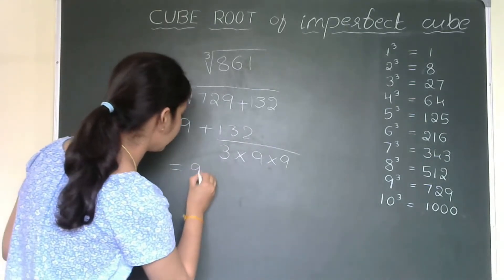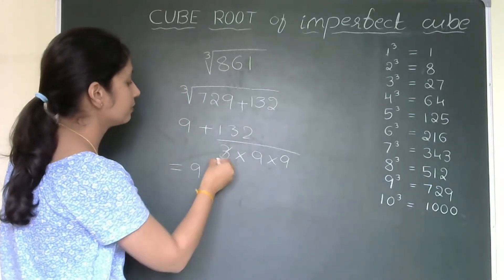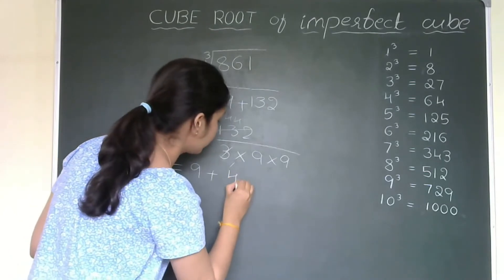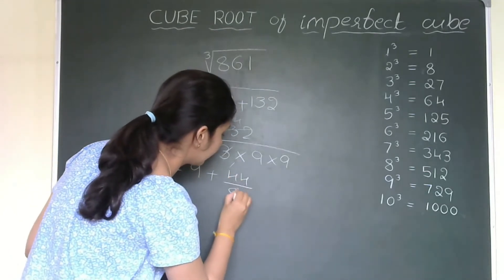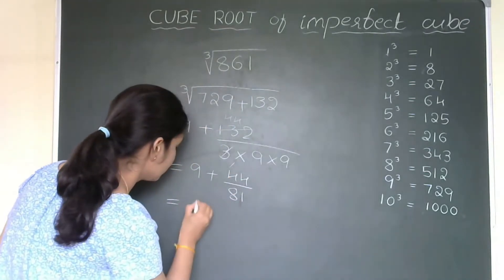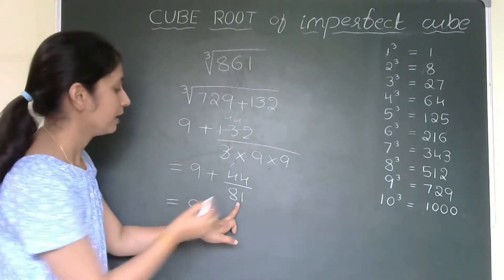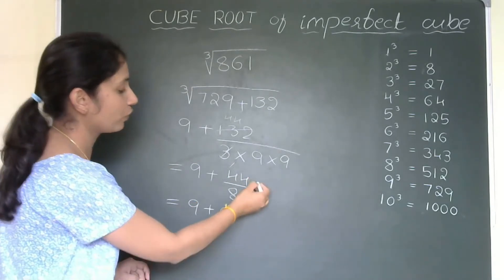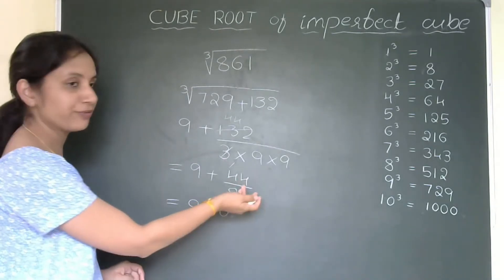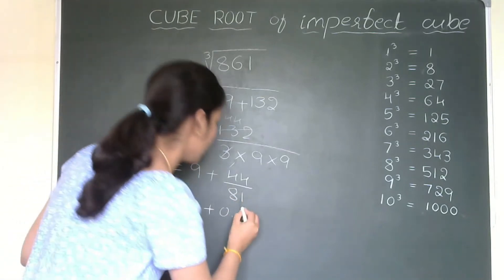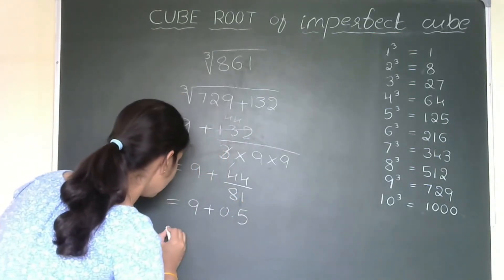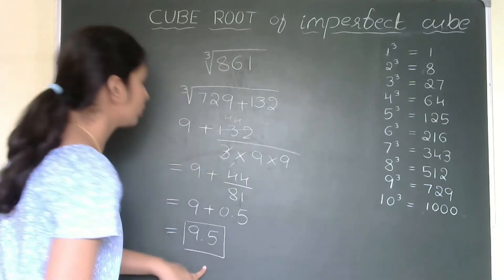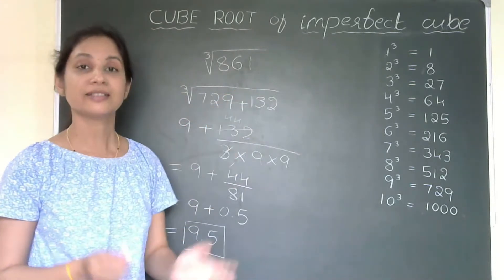Now, the next step is 9 plus, see 3 times 44 is 132, that means 44 divided by 81, I got here. So, 9 plus, here if I consider decimal point, it becomes 440, then 8 fives are 400. So, I can go for 5, that means our answer is approximately 9.5. This is the cube root of 861.